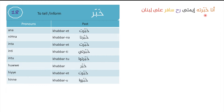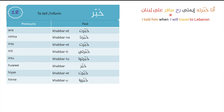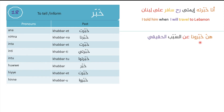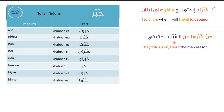Example: ana khabbartu — emta rahs safir ala libnan? — I told him when he's going to travel to Lebanon. Ana khabbartu, I told him. Also: enne khabbarouna — they told us.